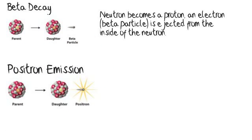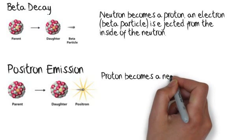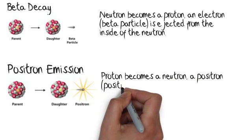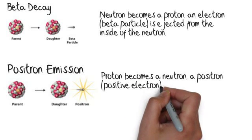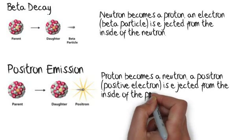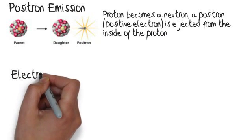In positron emission, we have a parent nucleus ejecting a positron. So a proton becomes a neutron as a positron is ejected. And we have the atomic number of the parent nucleus going down one to make a daughter nucleus. That is a new element.